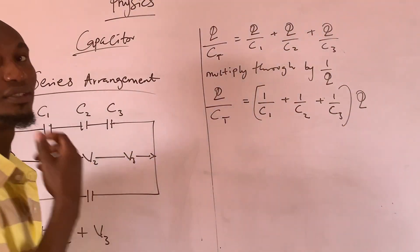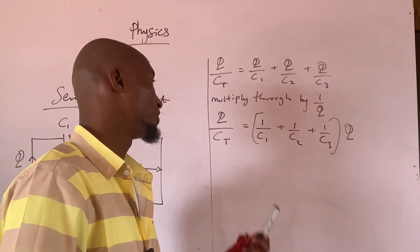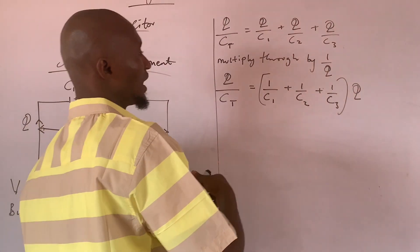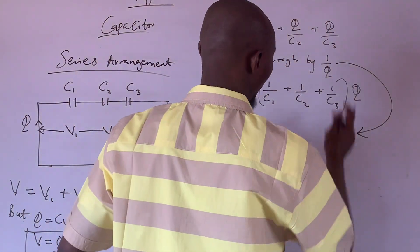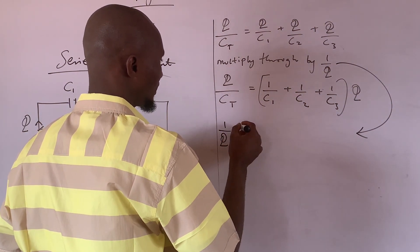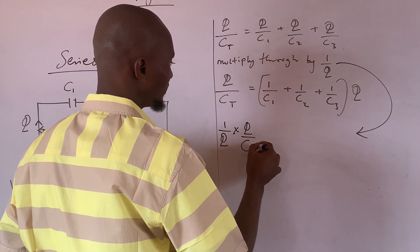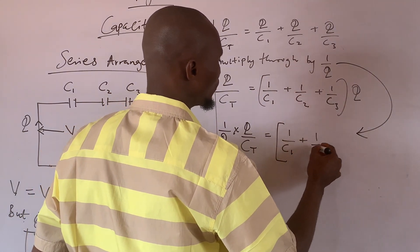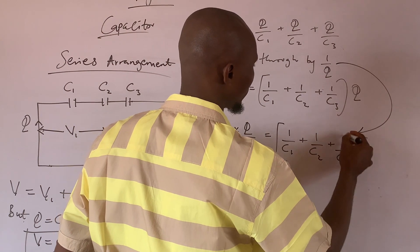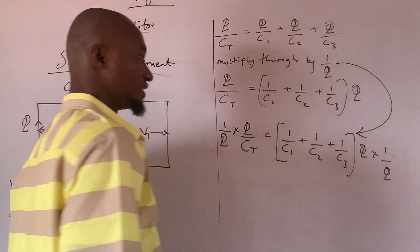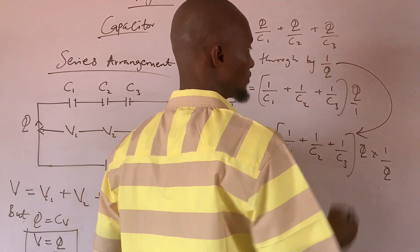Because Q times 1 over C1 equals Q over C1. Q times 1 here equals Q over C2. Q times 1 here equals Q over C3. So here, we are still here. I factor it out. But then, that is when I will apply this. So apply this now. Now, 1 over Q times Q over CT equals 1 over Q times Q bracket 1 over C1 plus 1 over C2 plus 1 over C3.